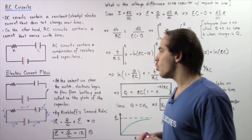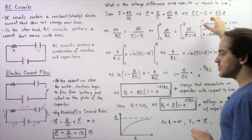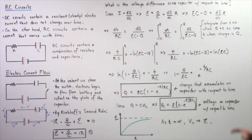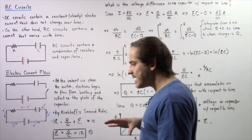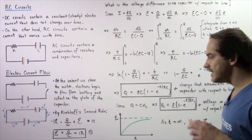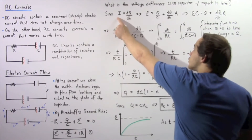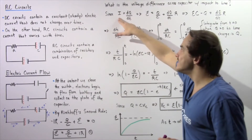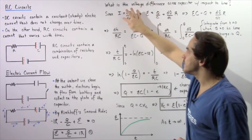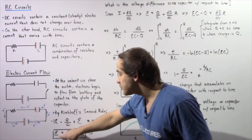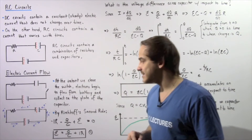Now let's answer the question: what is the voltage difference across our capacitor within an RC circuit with respect to time? We want to derive an equation between the voltage across the capacitor and time. We begin by recalling that electric current is the rate of change of charge, so the instantaneous current I equals dQ/dt. Note that R, the EMF, and C are all constants.